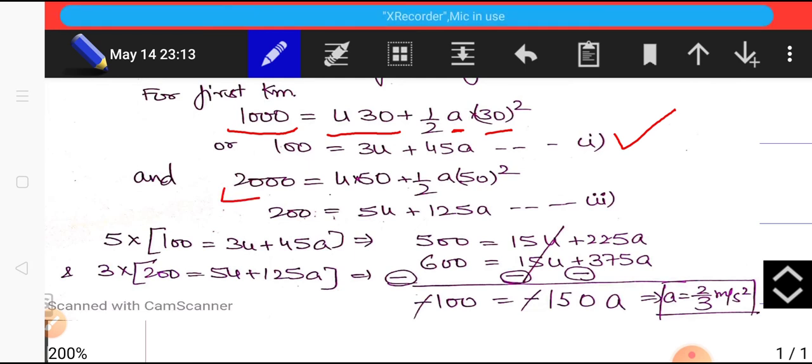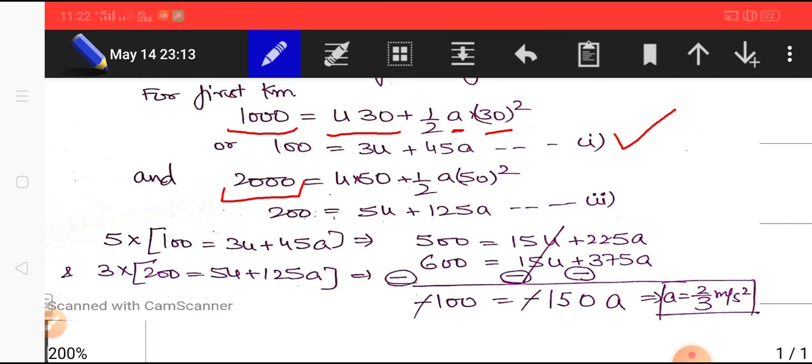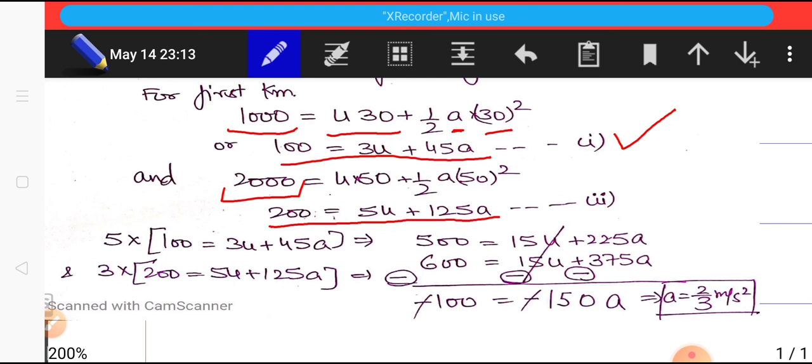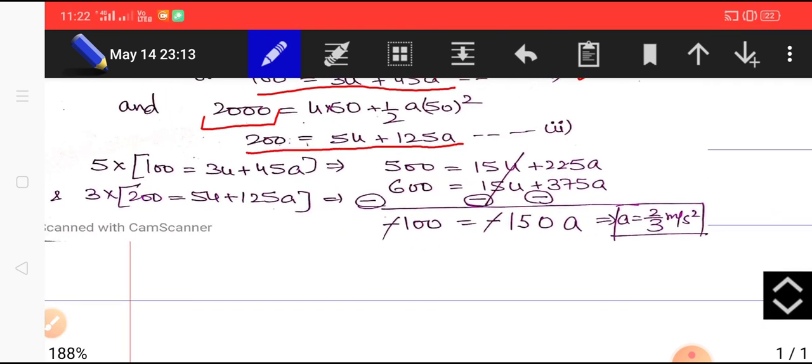Similarly, for the complete two kilometers, total time taken must have been 30 + 20 = 50 seconds. Applying this equation for the entire two kilometer distance with t = 50 seconds, we get the equation 200 = 5u + 125a. Now we are having two equations, 1 and 2, which are simultaneous equations we can solve.